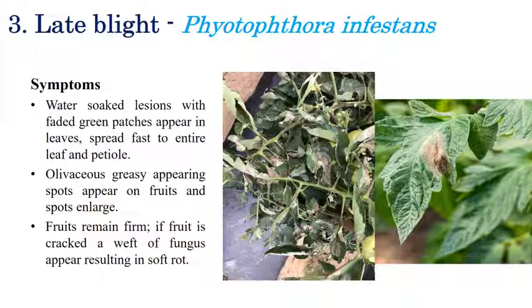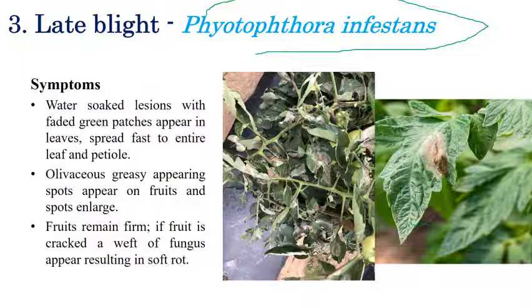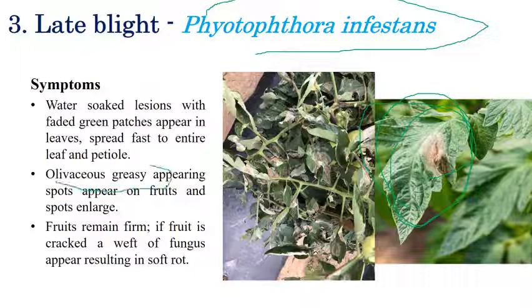The next disease is late blight, caused by Phytophthora infestans. Water-soaked lesions can appear on leaves. Initially small water-soaked brownish lesions are seen, which later spread to the entire leaf. The correct terminology for the appearance is 'olivaceous greasy spots,' which can be observed on both leaves and fruits.